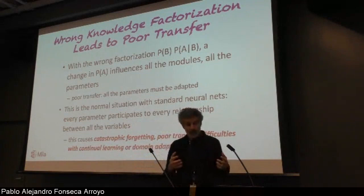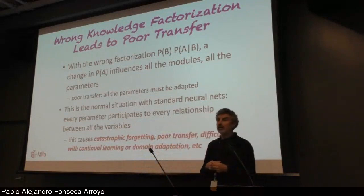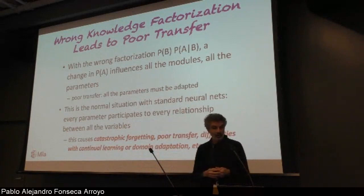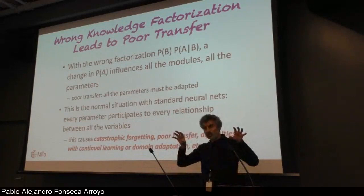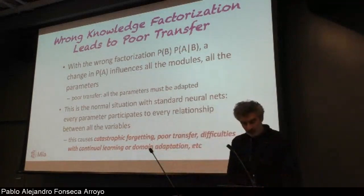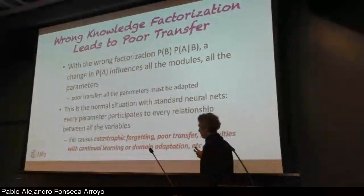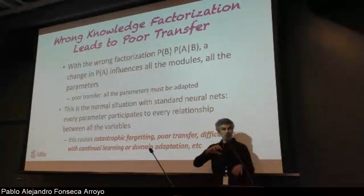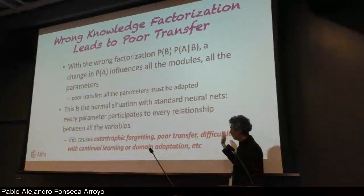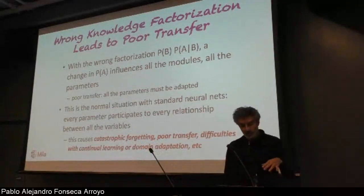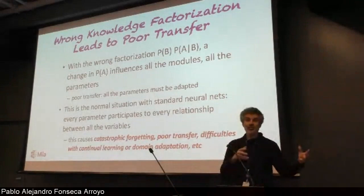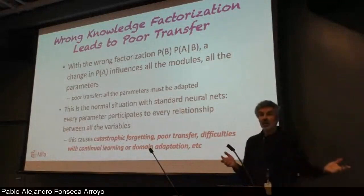I'm claiming this is almost the norm in standard neural nets - that when you have a transfer scenario, domain change, continual learning, catastrophic forgetting, every parameter in the neural net will naturally want to participate in minimizing the error. You will not have the fast adaptation that would come out of having the right architecture that fits the underlying structure of the causal relationships.